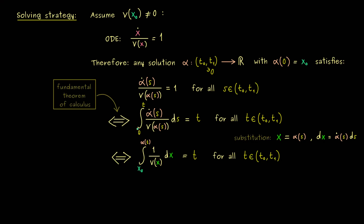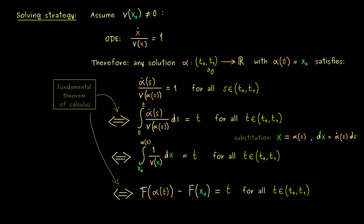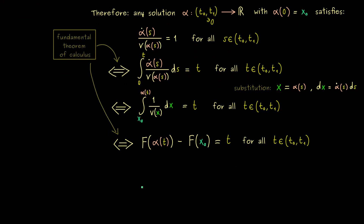To solve our original ODE we have to find antiderivatives of the function 1 divided by v. By the fundamental theorem of calculus, the integral can be written with antiderivatives: we have capital F at the upper limit alpha(t) minus capital F at the lower limit x₀, where capital F is an antiderivative of 1 over v. This procedure only works if we can find such an antiderivative.